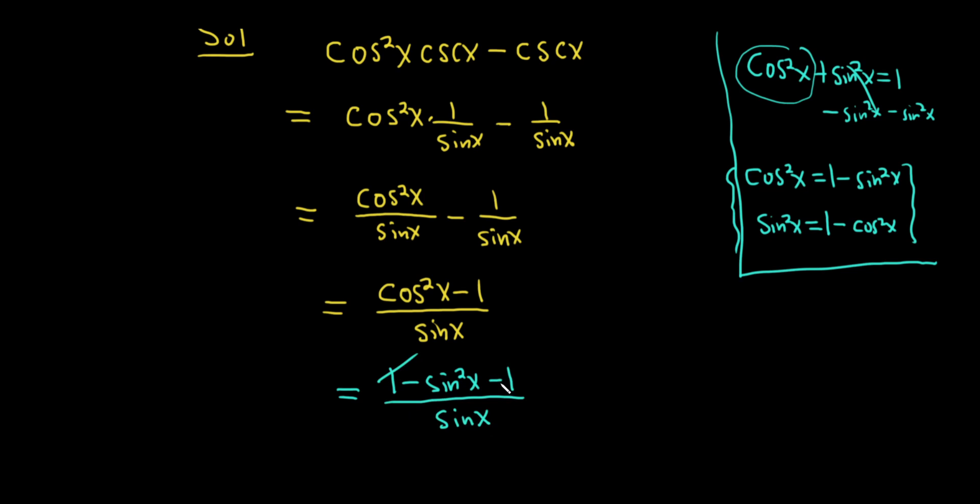Oh, look at that. These go away. So we have negative sine squared over sine x. And we lose a copy of sine, one of them cancels, and we're left with negative sine x.